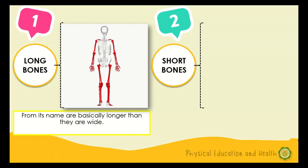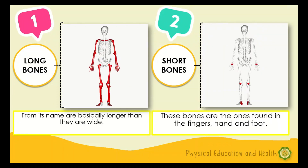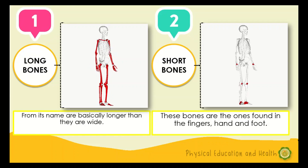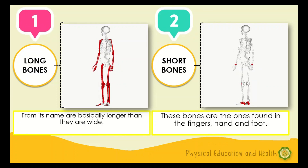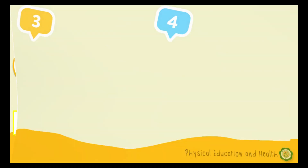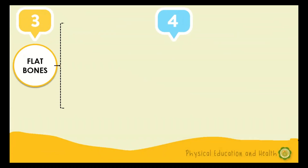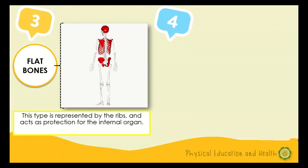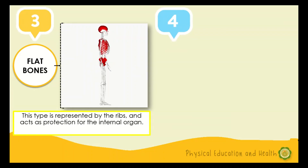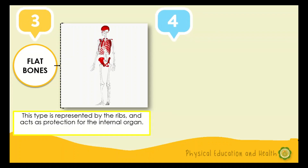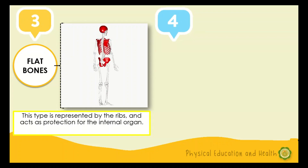The second type is short bones, found in the fingers, hand, and foot. Short bones are responsible for a little movement, and provide support and stability. Examples include the carpals, patella, and tarsals. The third type is flat bones, represented by the ribs, which act as protection for the internal organs. Usually thin and sometimes curved, flat bones protect internal organs like the brain and heart. Examples include the lacrimal, nasal, vomer, frontal, occipital, scapula, sternum, ribs, and hips.